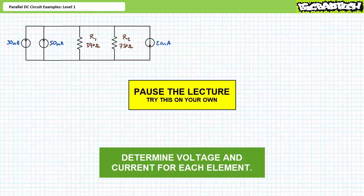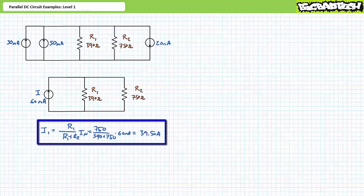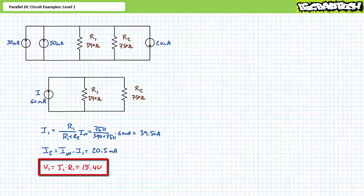If you're tracking, you should have obtained the following results. Current sources in parallel add up: 30 plus 50 minus 20 yields a combined current source of 60 milliamps. This 60-milliamp source is in parallel with R1 and R2 — a perfect setup for the current divider rule. The current divider rule yields I1 equals 39.5 milliamps. Kirchhoff's current law gives I2 as the remaining 20.5 milliamps. An application of Ohm's law shows that the voltage across R1 is 15.4 volts, and by extension all elements in this parallel circuit experience a 15.4-volt differential.